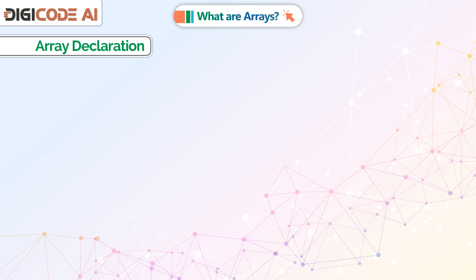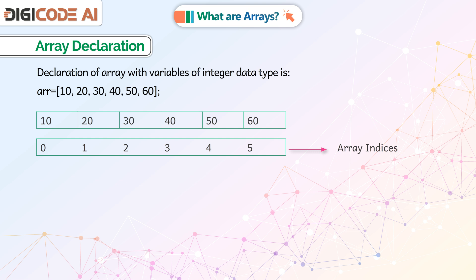Array declaration: Declaration of array with variables of integer data type is arr=[10, 20, 30, 40, 50,